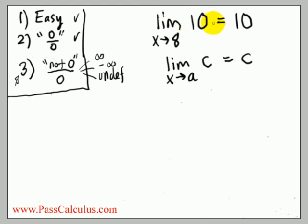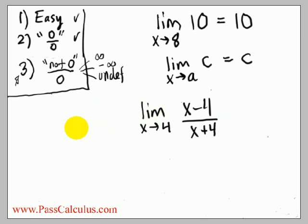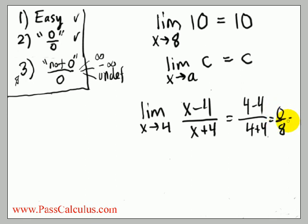What about something like the limit as x goes to 4 of (x minus 4) over (x plus 4)? We should always substitute the value first. Putting in 4 gives us 4 minus 4 over 4 plus 4, which is 0 over 8. The bottom is not 0, so this is still type 1 — we can just substitute directly. 0 divided by 8 is 0, so the answer for this limit is 0.